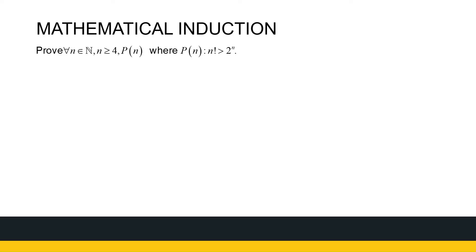The second example is a bit different. It says: for all natural numbers n greater than or equal to 4, P(n) states that n factorial is greater than 2 to the power n. It works from 4 onwards — for numbers less than 4, it won't work. If we look at 3, for instance: 3 factorial is 6, and 2 to the power 3 is 8. Since 6 is not greater than 8, it doesn't work for 3. But our statement says it holds for 4 and everything bigger.